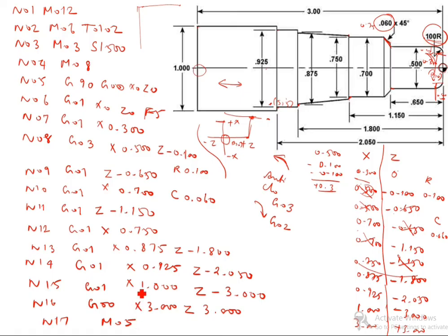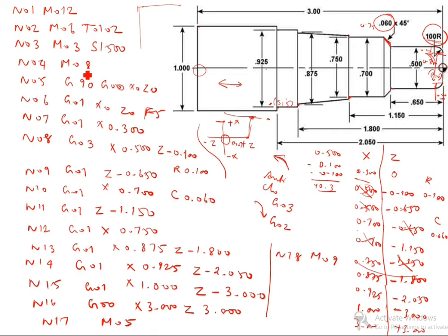N17 M05 — spindle off. M03 was spindle on, here M05 is spindle off. N18 M09 — coolant off. M08 is coolant on, M09 is coolant off. N19 M30 — this is end of the program. The program is complete.